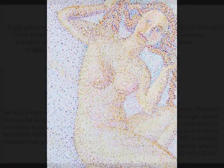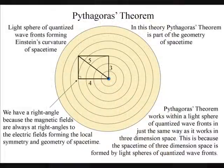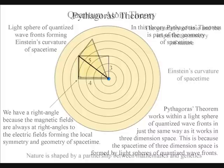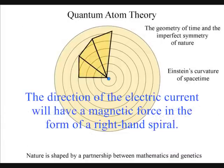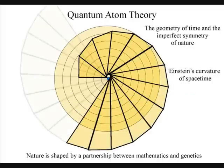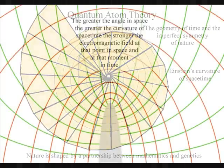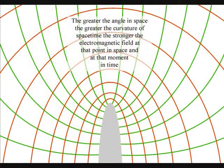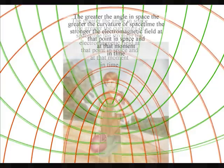The magnetic fields are always at right angles to the electric fields, forming the local space-time symmetry and geometry that will spiral out, creating the visual and mathematical patterns of our universe. The greater the angle in space, the greater the curvature of space-time, the stronger the electromagnetic field at that point in space and at that moment in time.